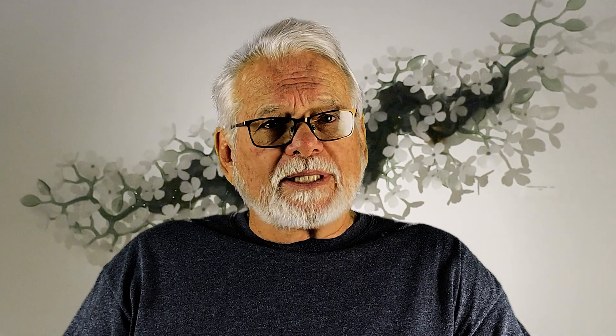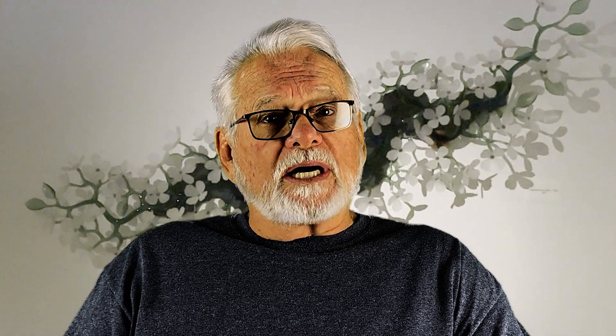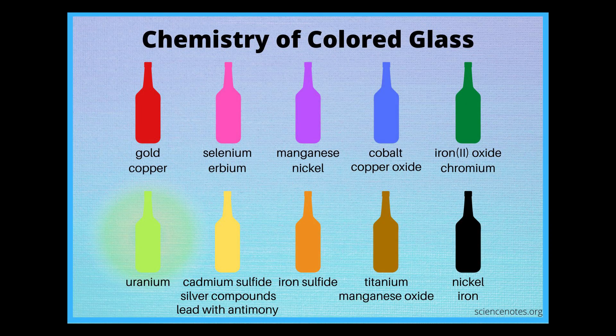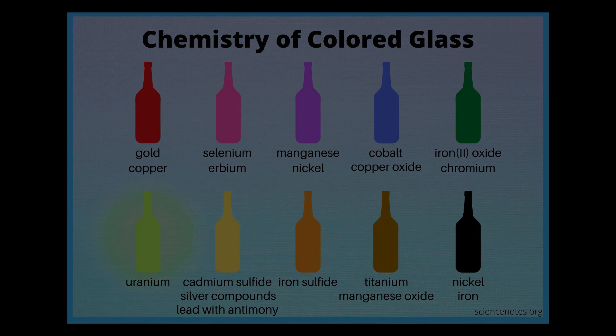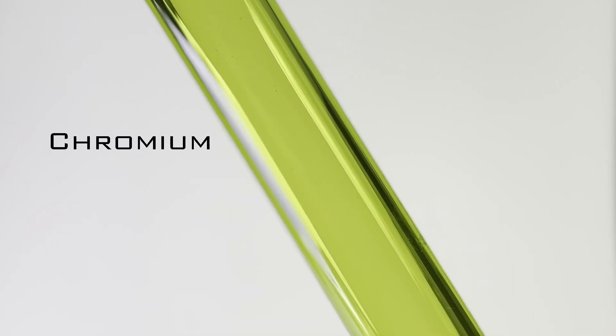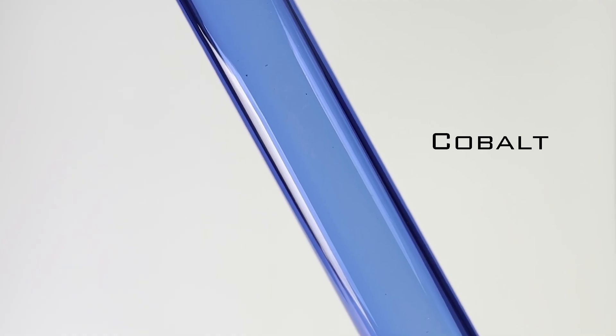Chief among these is color. Here is a chart of some of the chemical elements and compounds used to colorize glass. And here are some videos of colored glass along with the elements and compounds used to colorize them.